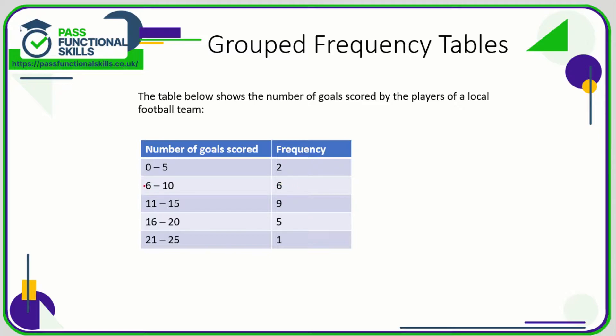Six people scored between six and ten goals, nine people scored between 11 and 15 goals. So we've worked out that these values here correspond to the number of people. If we add these values up in the frequency, we can work out how many people were in the football team. So two plus six plus nine plus five plus one comes to 23. So the squad of players is 23. A key thing to do with group frequency tables usually is to add up the frequency column. That way you've got your total number of values.